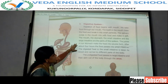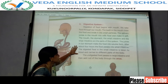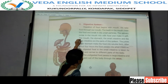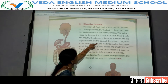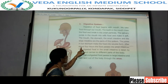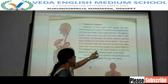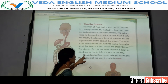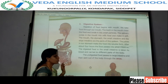Digestion of food begins with the mouth. We take food through our mouth; teeth chew the food and break it into small particles. Salivary juices in the mouth mix with the food and make it soft. Stomach juices make the food into soluble form. After about 4 hours, food passes into the small intestine where it is completely digested, absorbed by blood, and carried to different parts of the body. Undigested food passes to the large intestine and is sent out through the anus.